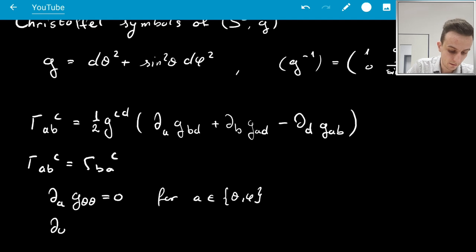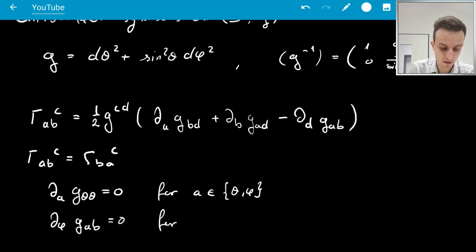And ∂_φ of G_AB is 0 for, actually I could write here θB for AB in θφ, and here for AB in θφ again.